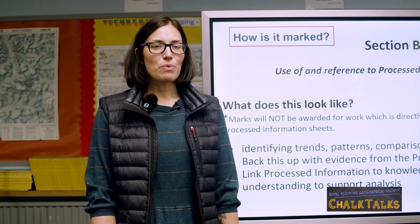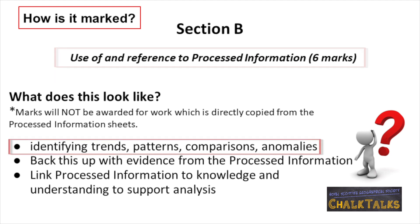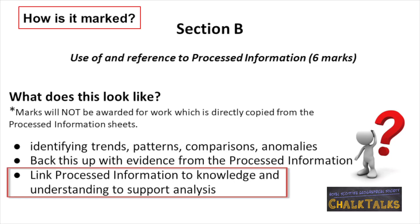Section B is also worth six marks and is about using your processed information. This could be identifying trends, patterns, anomalies and relationships between data sets. You should try and refer to your processed information to support your analysis and your knowledge and understanding of your topic.